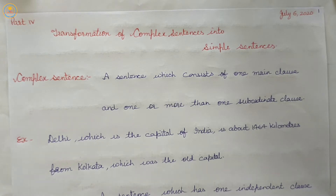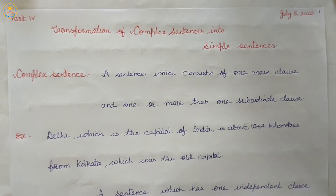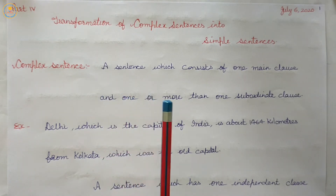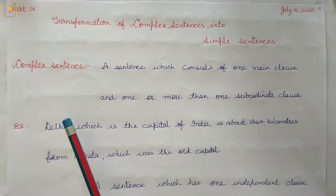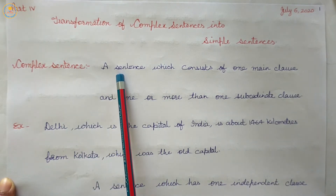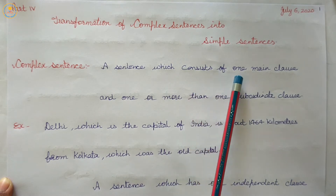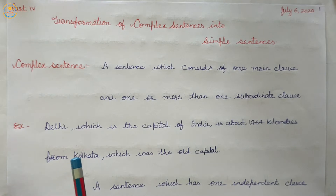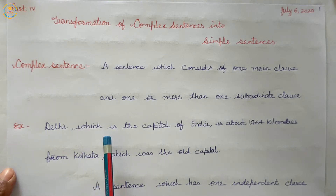Before going to the rules and examples, let us know what a complex sentence is. A sentence which consists of one main clause and one or more subordinate clauses is known as a complex sentence.